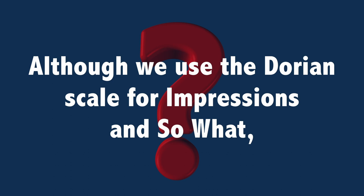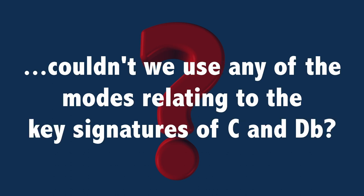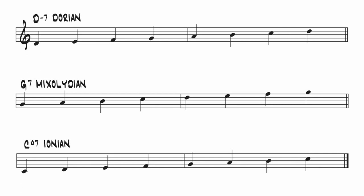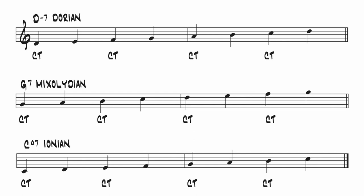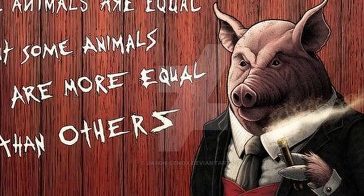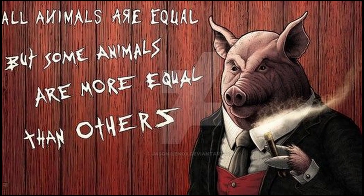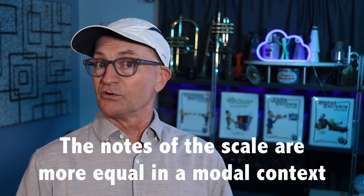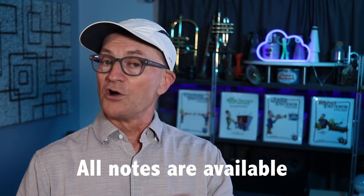Although we use the Dorian scale for Impressions and So What, couldn't we use any of the modes relating to the key signatures of C and D-flat? The answer is yes, and that goes to the heart of modal improvisation. In a functional harmony situation like 2-5-1, all three chords are derived from the same group of notes, which are used to create the Dorian, Mixolydian, and Ionian modes. Although all those notes are available on each chord, the prominence of specific notes changes, with some acting as chord tones and others as passing tones or extensions. To misquote George Orwell: all notes are equal, but some notes are more equal than others. In a modal tune, the chord tones are generally not used to create the voice leading that defines a chord progression, so in that regard the notes of the scale are more equal in a modal context. Therefore, all the modes are available — or, more accurately, all 7 notes are available.